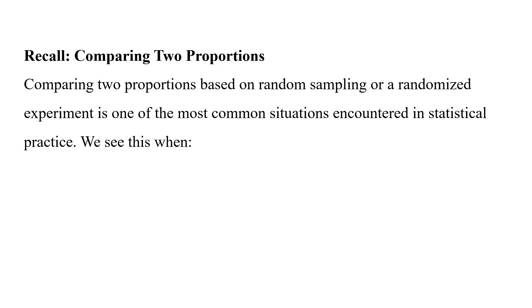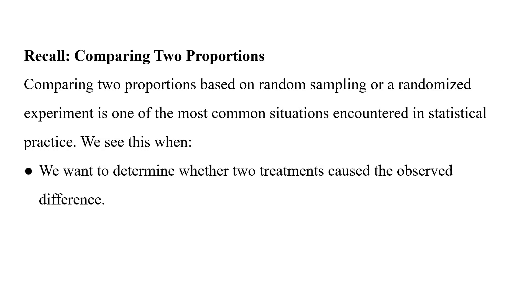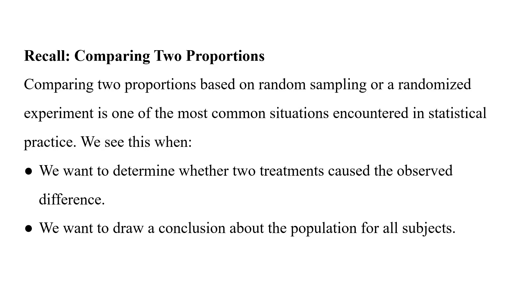Before we make a confidence interval for a difference in proportions, I want to recall why we are comparing two proportions. Our last two sets of notes deal with comparing two proportions — one for a confidence interval and one for a significance test. Comparing two proportions based on two random samples or two randomized experiments is one of the most common situations we encounter, either to determine whether two treatments caused an observed difference or to draw conclusions about two populations. Comparative studies are the most common statistical practice.